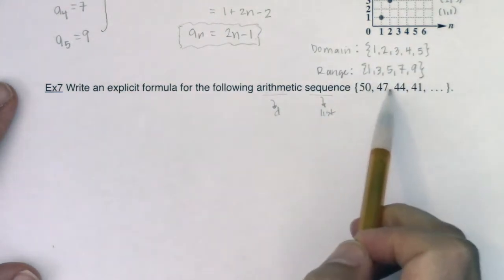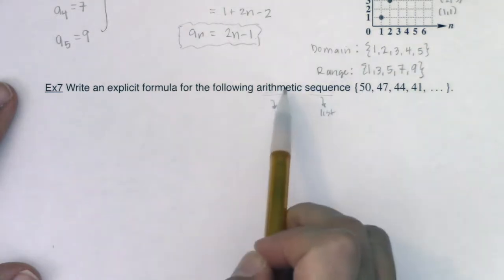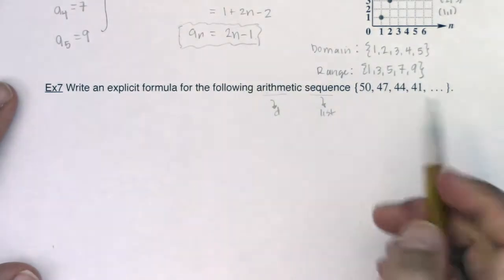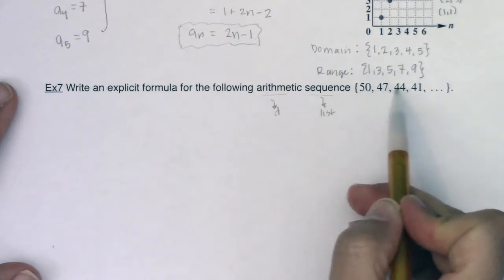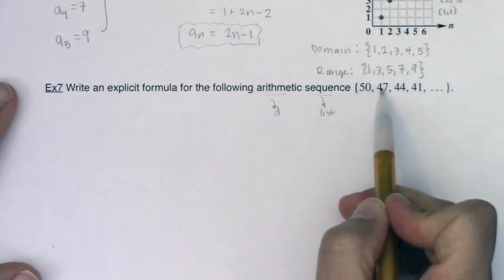And, you know, if I look at my list of numbers, even though this says arithmetic, even if it didn't, if it just said sequence, I could see that it was arithmetic because I can see the common difference here, right?